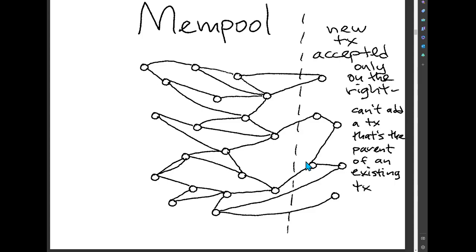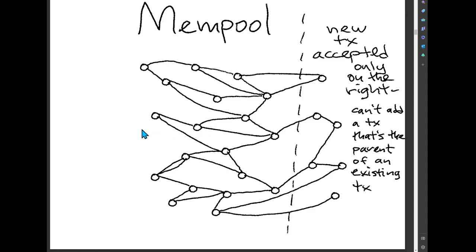On the other side, we can add transactions to the right side of this DAG and accept new transactions there. We can't add transactions to some arbitrary place on the left because we can't have transactions that refer to nonexistent parents. Every transaction's parents have to already be known and exist.